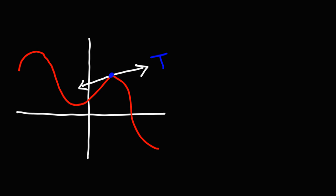Now the secant line is a little bit different. The secant line touches the curve at two points. So let's say if we're focused on these two points and if we draw a line between them, that will be called a secant line — it touches the curve at two points. So that's the difference between a tangent line and a secant line.